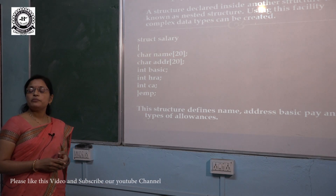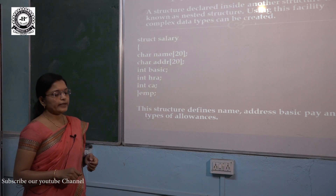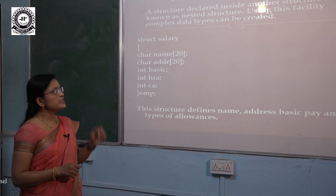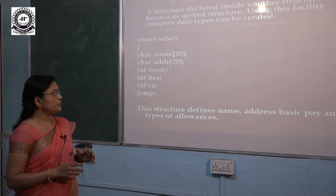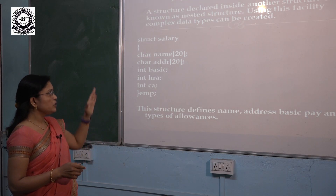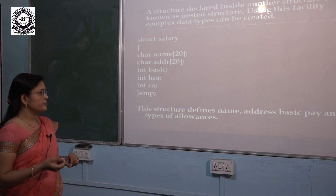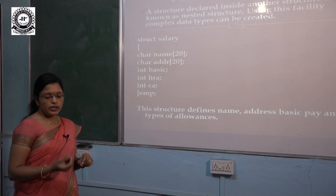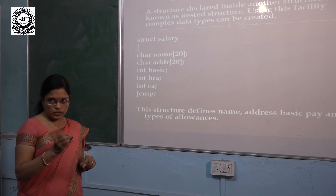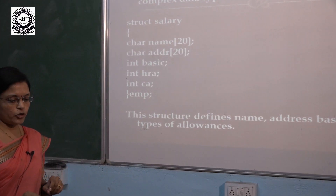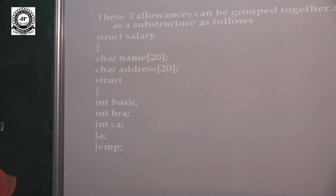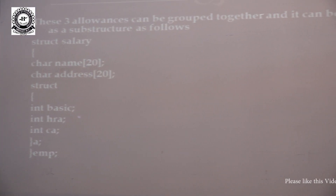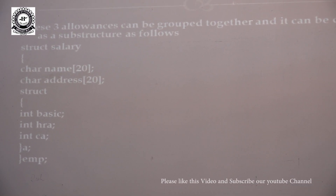Now we will see what is meant by nested structure. A structure declared inside another structure is known as a nested structure. Using this facility, complex data types can be defined. Suppose we have a structure with members like name, address, basic, HRA, and DA — different elements regarding the salary of an employee. We can club the three types of allowances together and declare them as a sub-structure inside the main structure.